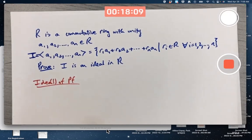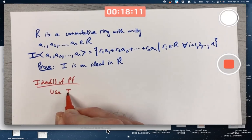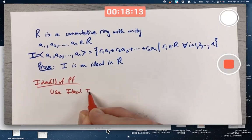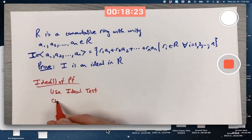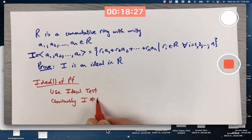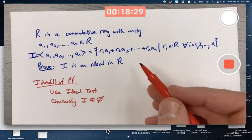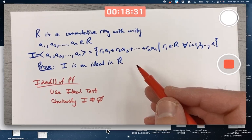Okay, so you'd want to use the ideal test. Use the ideal test. So what does that mean? That means, well, first of all, you should verify that it's not empty, but it's obviously not empty. Obviously, I is not the empty set. It's got the A's in it, if nothing else, where you could take the R's to be one, for example.